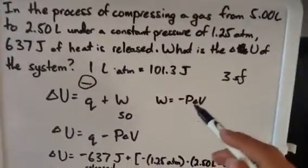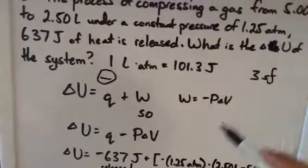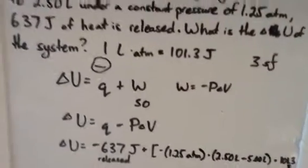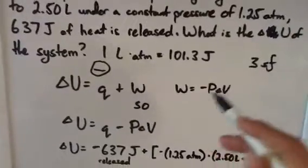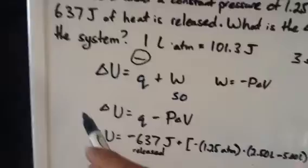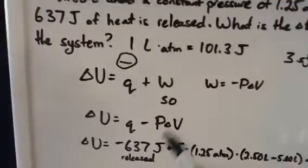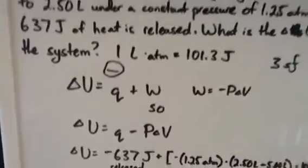We know that work is equal to negative P change in V. So that's negative pressure in atmospheres times the volume in liters. If we plug in this value for W into our heat plus work, we are going to get the change in enthalpy equals heat minus P change in V. So let's plug this all in.